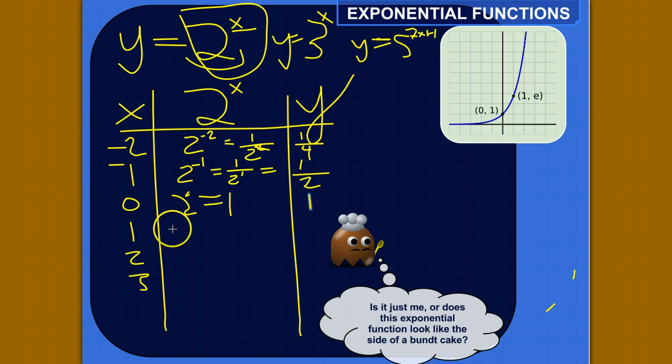What about plugging in 1 for x? 2 to the first is equal to 2. If x is 2, then this would be 2 to the 2, 2 to the second power, which is equal to 4.